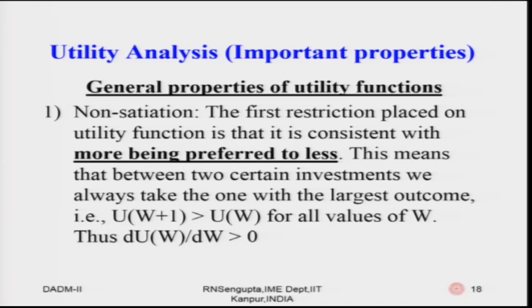Non-satiation means that between any two wealth values W, U(W) is always less than U(W + ΔW), which means the first derivative of the utility function with respect to W is always positive. The question is whether this positive first derivative is increasing at an increasing rate, increasing at a constant rate, or increasing at a decreasing rate — that will differentiate and give us the second property.